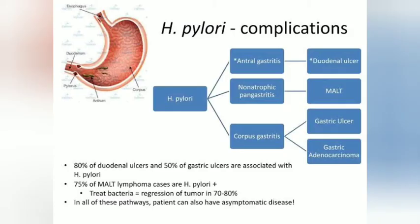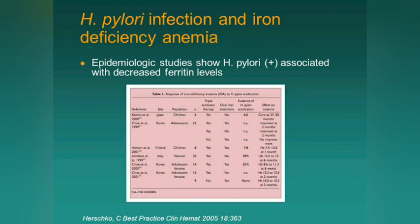Complications include malignancies such as gastric adenocarcinoma and MALT lymphoma, as well as iron deficiency anemia and immune thrombocytopenia.